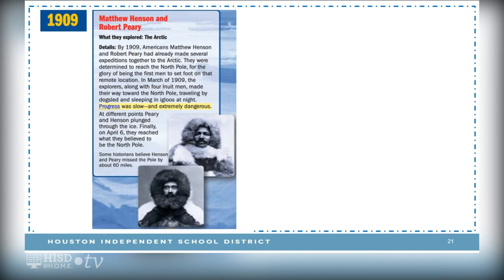1909 — Matthew Henson and Robert Peary. What they explored: the Arctic. By 1909, Americans Matthew Henson and Robert Peary had already made several expeditions together to the Arctic. They were determined to reach the North Pole for the glory of being the first men to set foot on that remote location. In March 1909, the explorers, along with four Inuit men, made their way toward the North Pole, traveling by dog sled and sleeping in igloos at night. Progress was slow and extremely dangerous. At different points, Henson and Peary plunged through the ice. Finally, on April 6, they reached what they believed to be the North Pole. Some historians believe Henson and Peary missed the pole by about 60 miles.